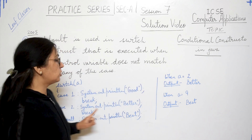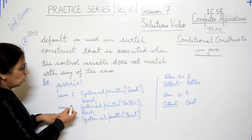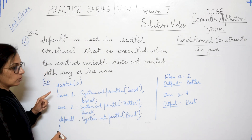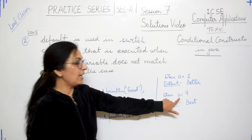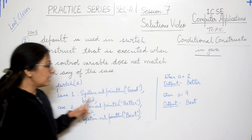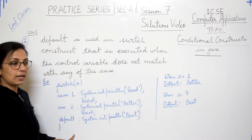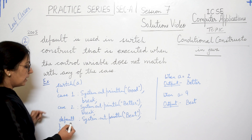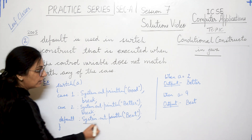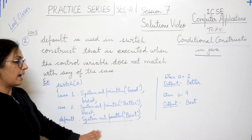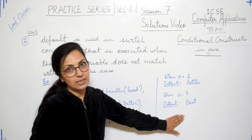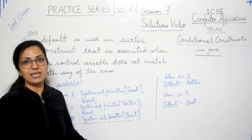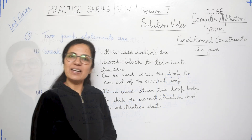But if the value of 'a' is something other than 1 and 2, then only the default statement is executed. For example, when a is 9 — 9 is not given in any of the case values — the statement after default executes and the output will be 'best'. I hope you completed this answer correctly in your practice notebook.